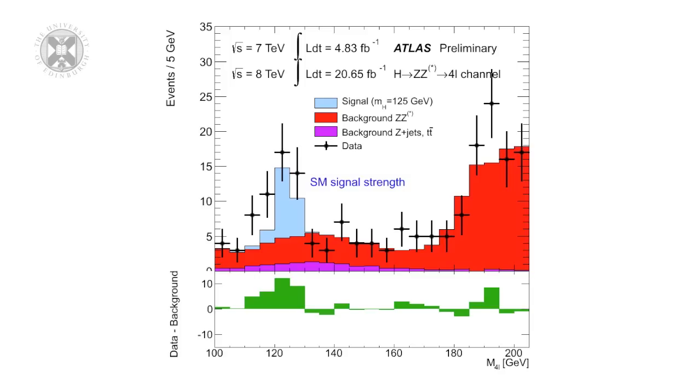Two different channels, two clear peaks, at the same place. 125 GeV, which is the mass of the Higgs.